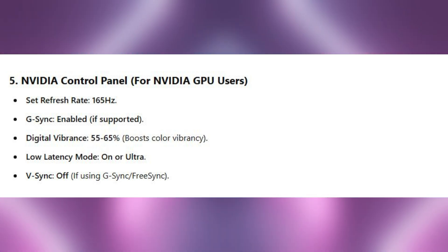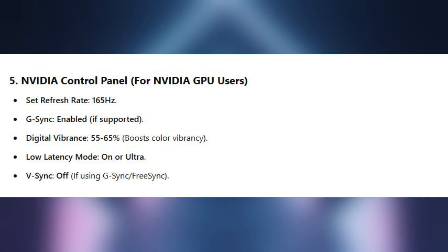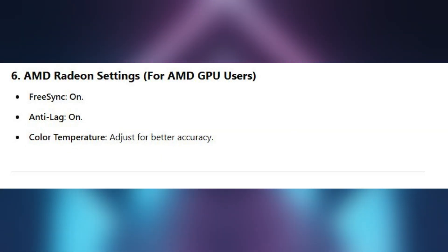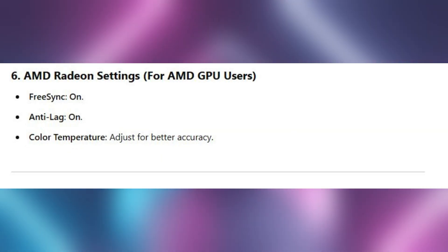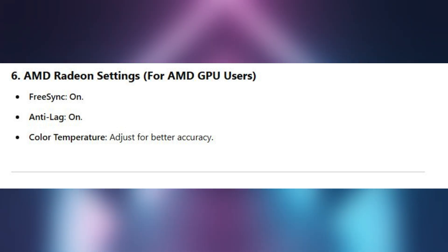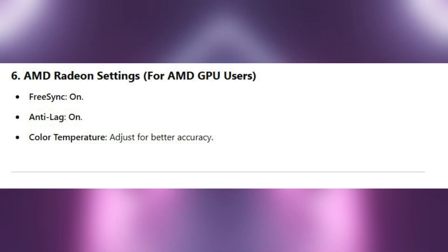Turn on low latency mode and turn off V-Sync if you are using G-Sync or FreeSync. For AMD users, turn on FreeSync and Anti-Lag, and adjust your color temperature for better accuracy.